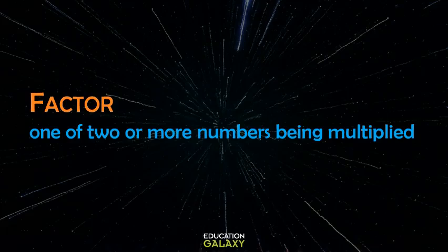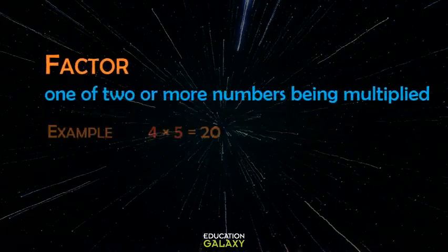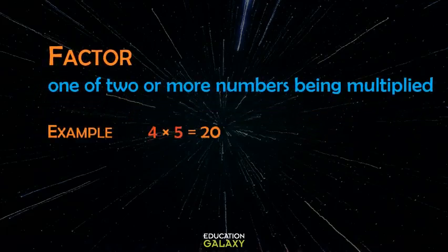Do you know the word factor? A factor is just one of two or more numbers being multiplied. So, for instance, in this equation, 4 times 5 equals 20 — 4 is a factor, and 5 is a factor.